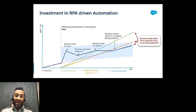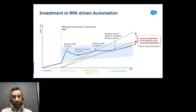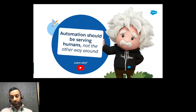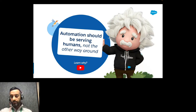You've shifted the effort from repetitive work into serving automation — and the moment you start serving automation, your automation journey has completely failed. This is the current market state. My mantra is: automation should be serving humans, not the other way around.